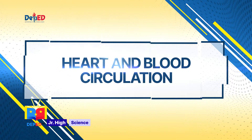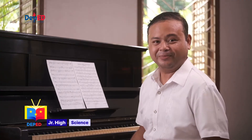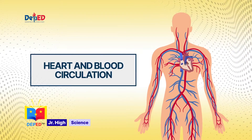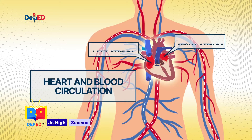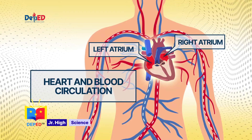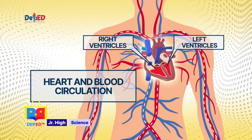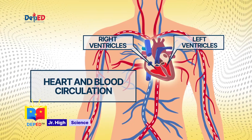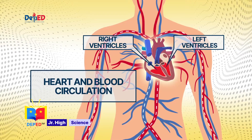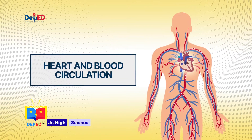Today, we are going to talk about the heart and blood circulation. Join me as I give you a quick tour to see what's inside the circulatory system. Here is how the parts work. The human heart consists of four chambers. The left and right atrium, which are the receiving chambers, contract to push blood into the lower chambers — the left and right ventricles — which act as the pumping chambers, propelling blood to the lungs or to the rest of the human body.